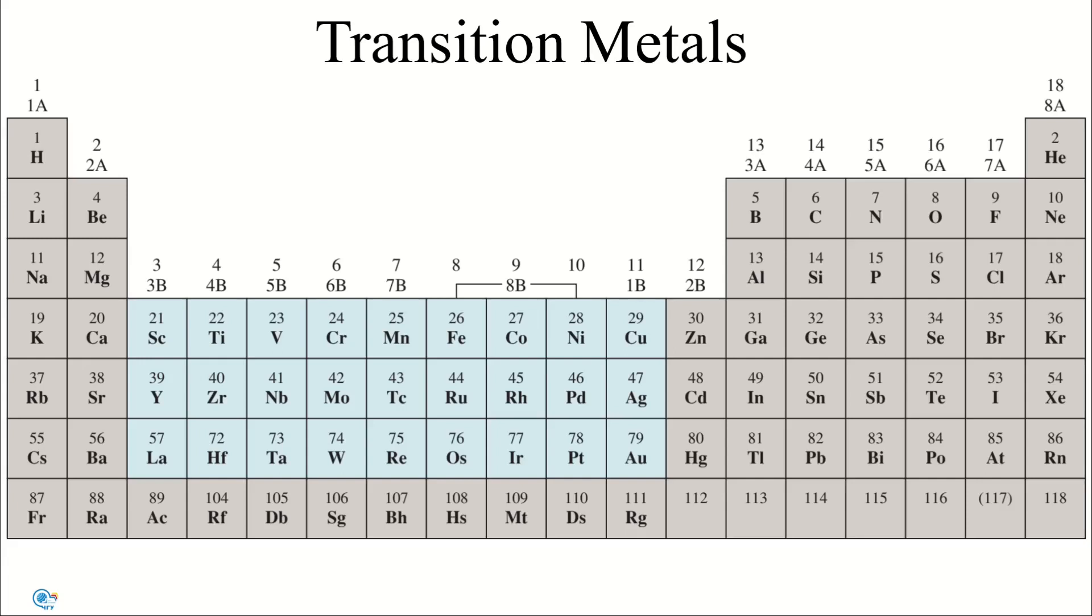However, most transition metals are inert toward acids or react slowly with them because of a protective layer of oxide. Case in point is chromium: despite a rather negative standard reduction potential, it's quite inert chemically because of the formation on its surface of chromium 3 oxide.